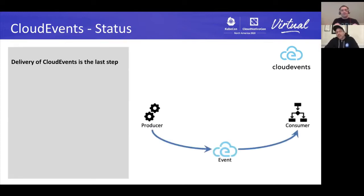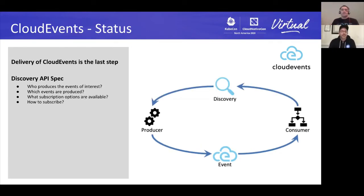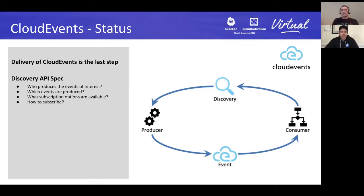There are two bits of work we're doing. CloudEvents is about getting the event from producer to consumer, so it's the tail end of the process. The first additional spec is the Discovery API. As the name implies, it's about the consumer discovering who produces the events of interest, what events each producer actually produces, and how to do the subscription itself — whether they support HTTP, AMQP, Kafka, and so on.